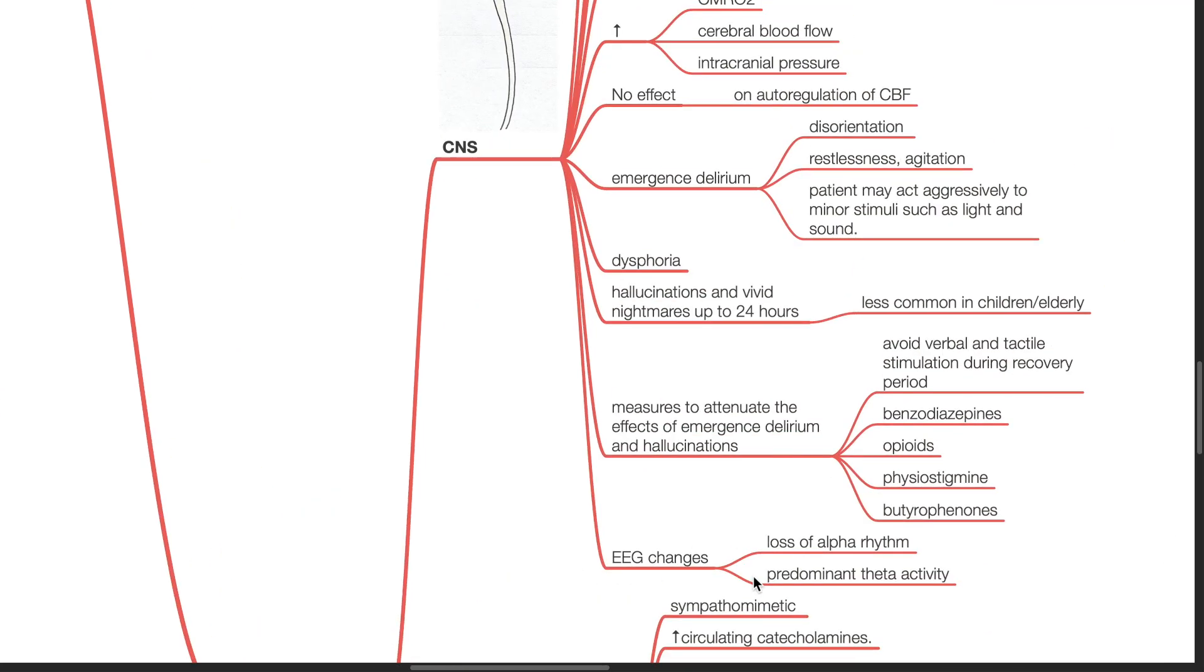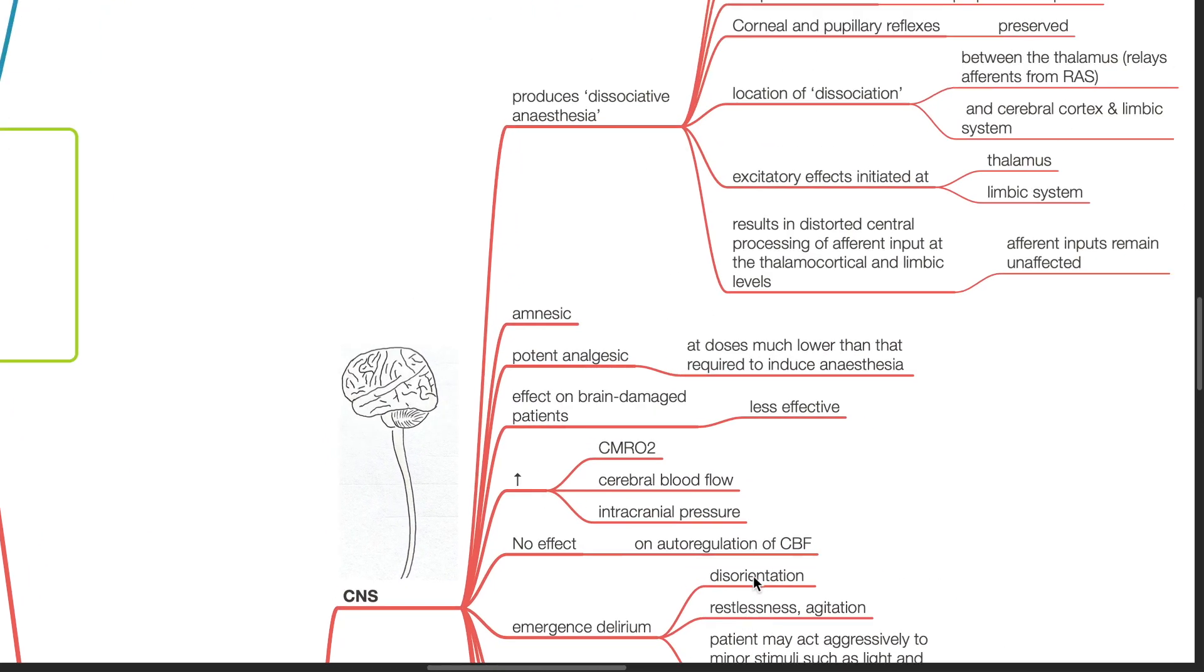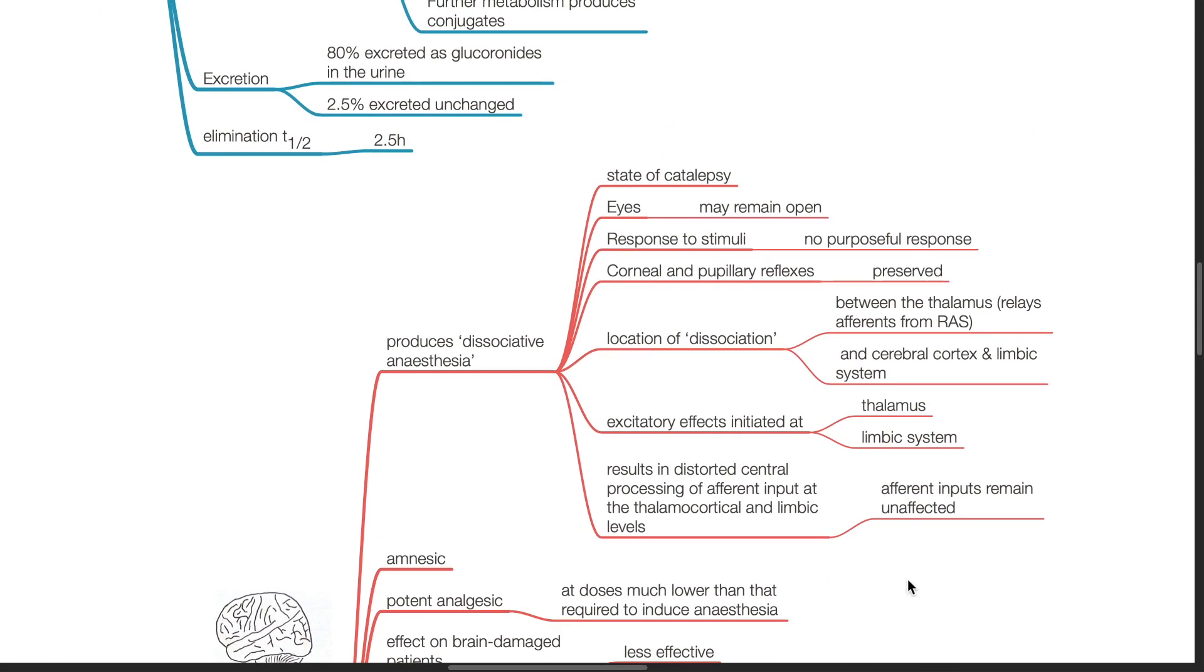Pharmacodynamics. For the central nervous system, ketamine produces dissociative anesthesia which is a state of catalepsy. The eyes may remain open, however there are no purposeful responses to stimuli. Corneal and pupillary reflexes are preserved.